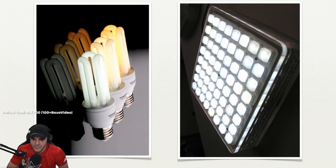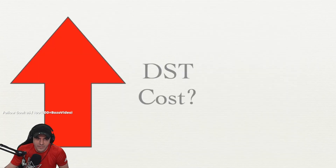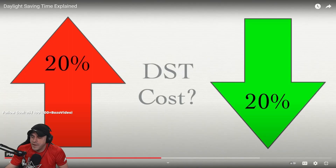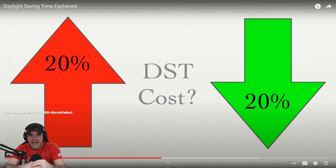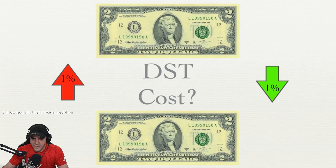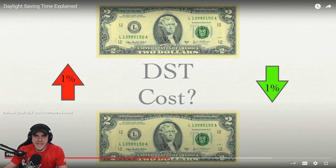Even assuming daylight saving time is effective, it's probably less effective with every passing year. The bottom line is: while some studies say DST costs more electricity and others say it saves electricity, the one thing they agree on is the effect is tiny - one percent or less - which in the United States works out to about four dollars per household per year saved or spent on electricity. Four dollars over an entire year isn't really a huge deal.